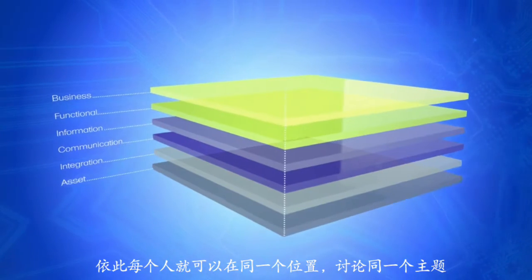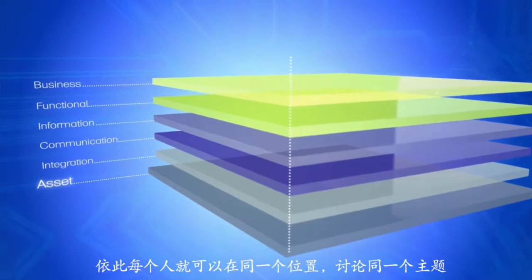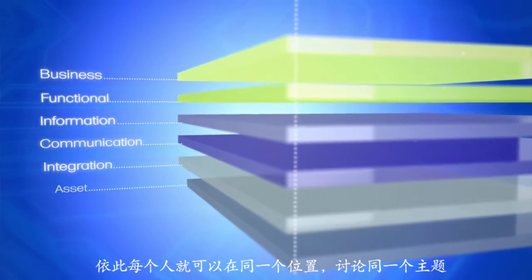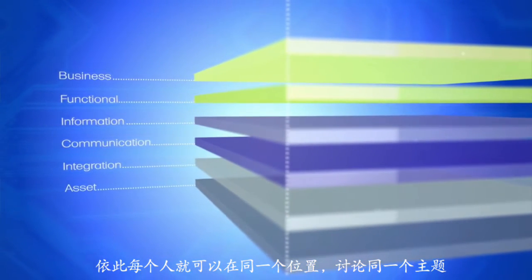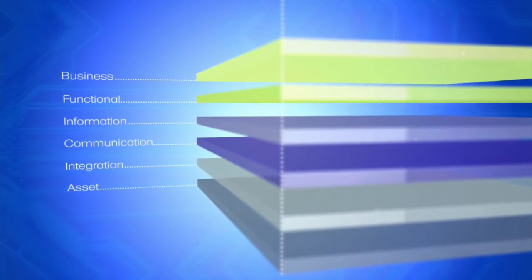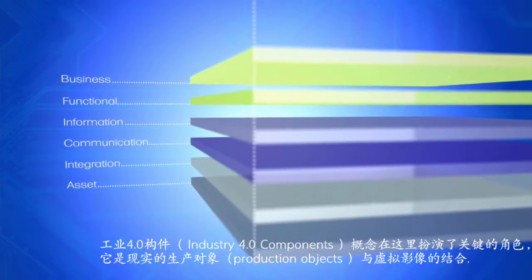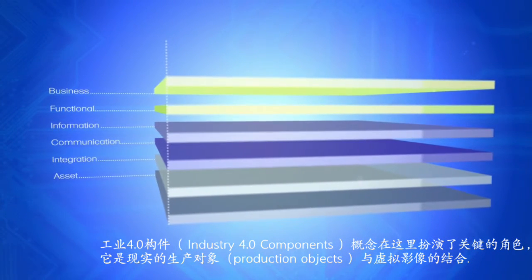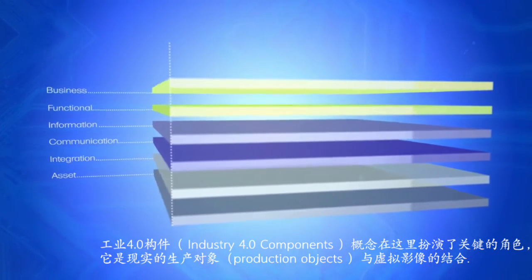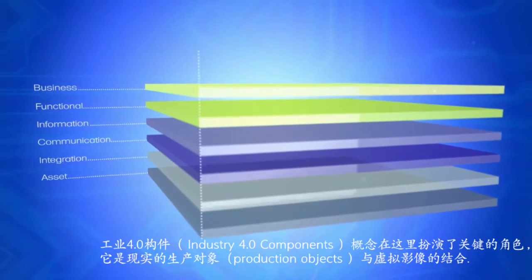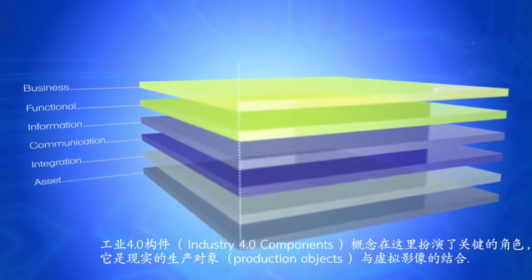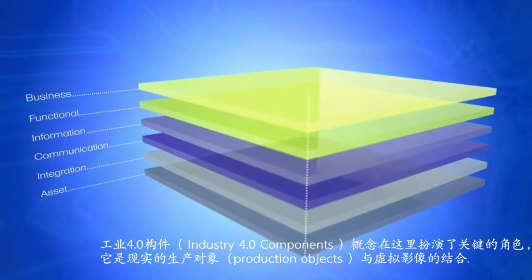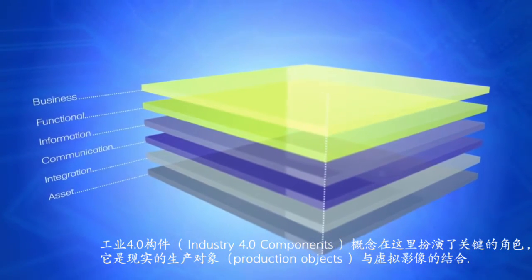Production objects are recorded, together with their data and functions, in six layers on the vertical axis. The concept of the Industrie 4.0 component plays a key role here — it is the combination of the real production object and its virtual image.